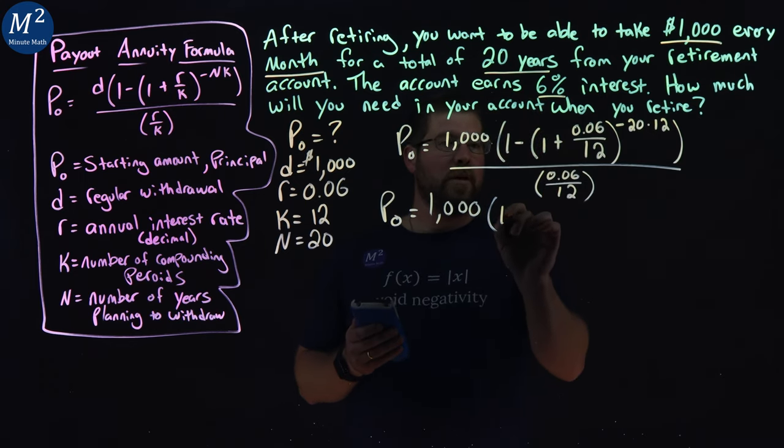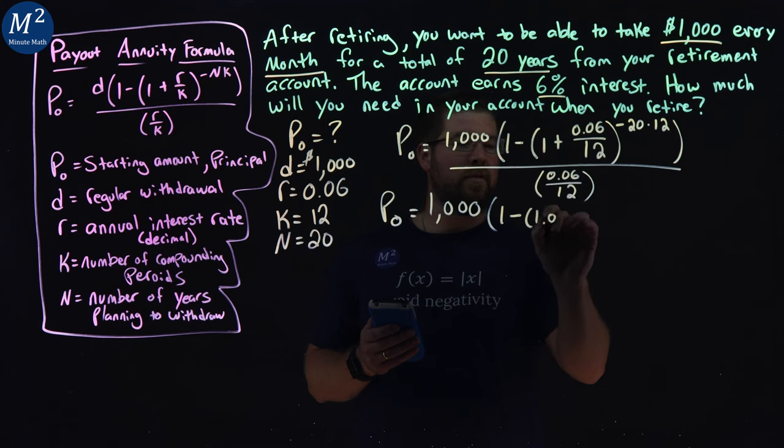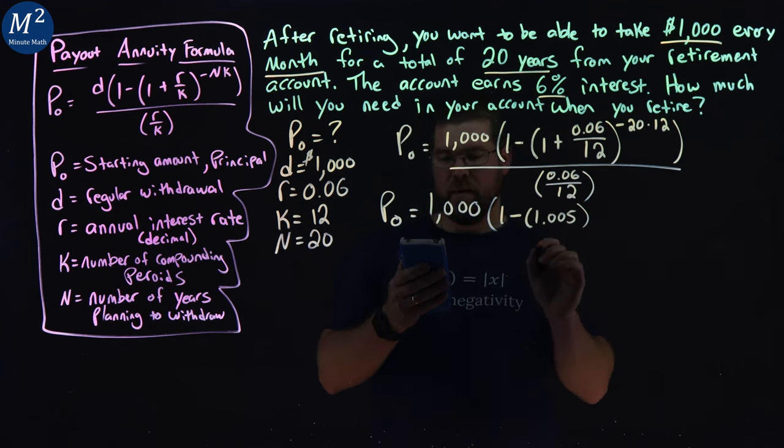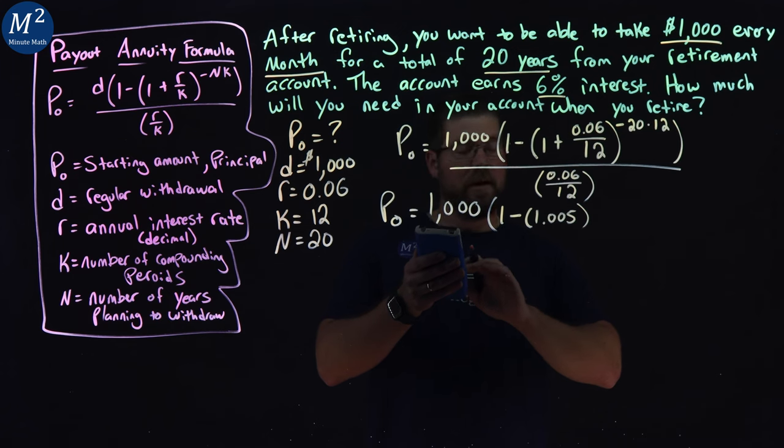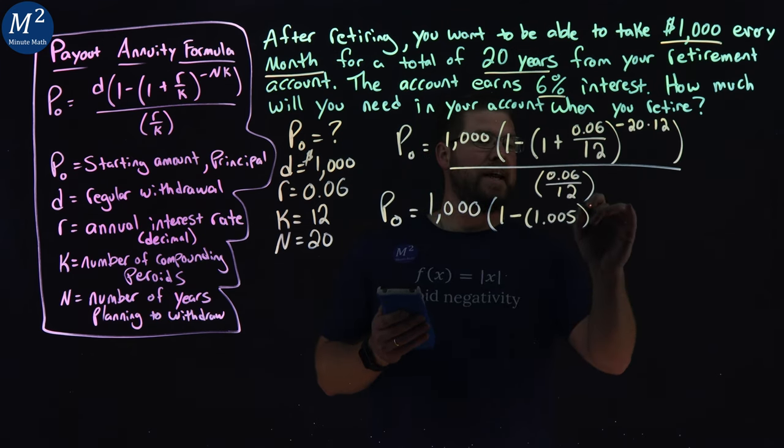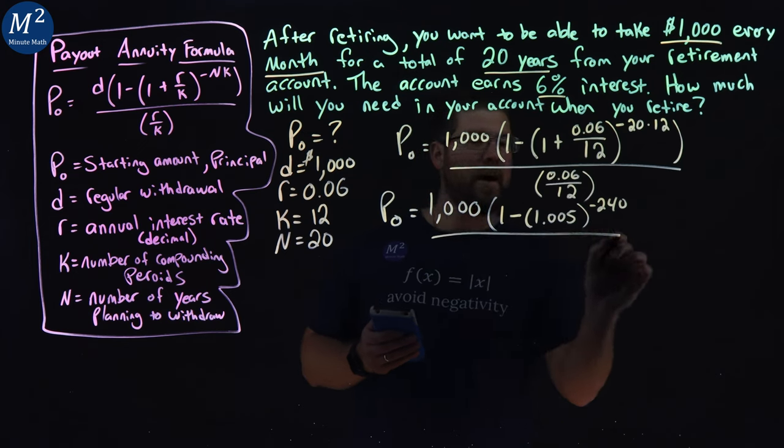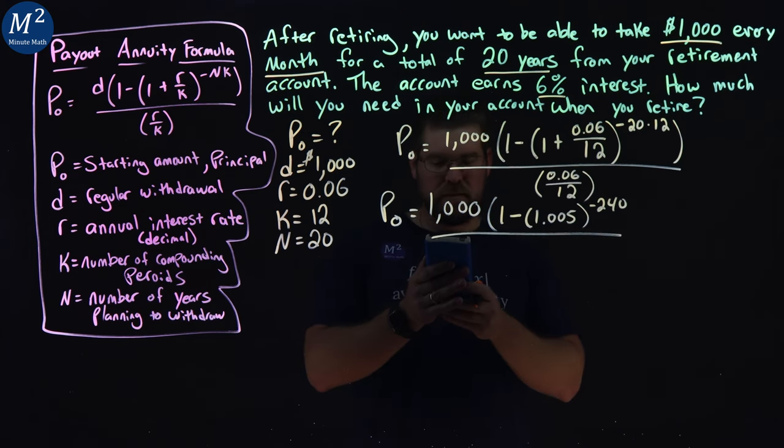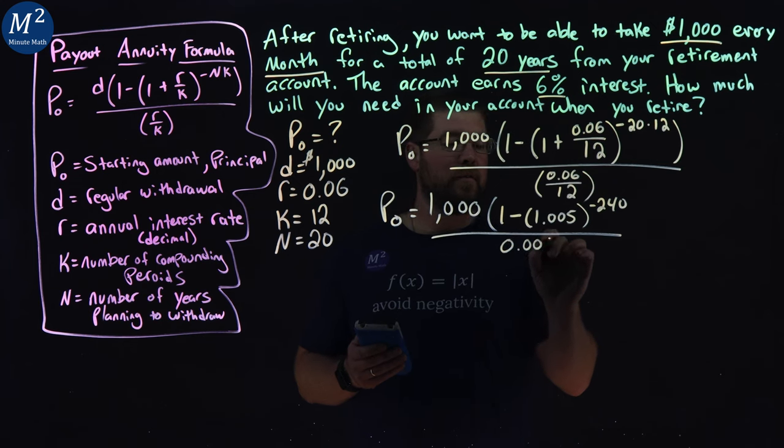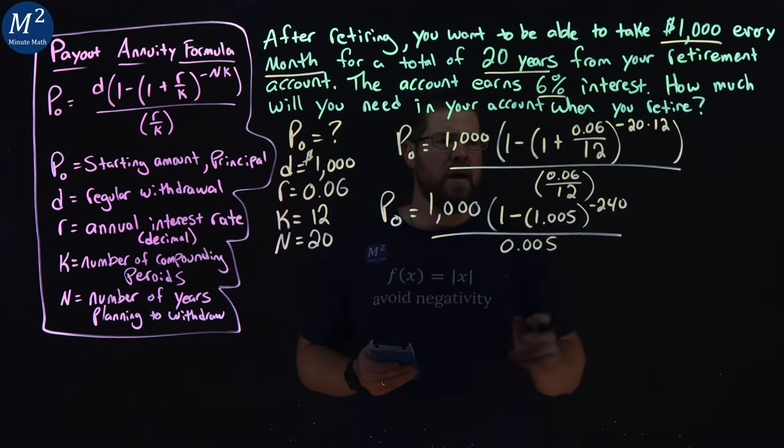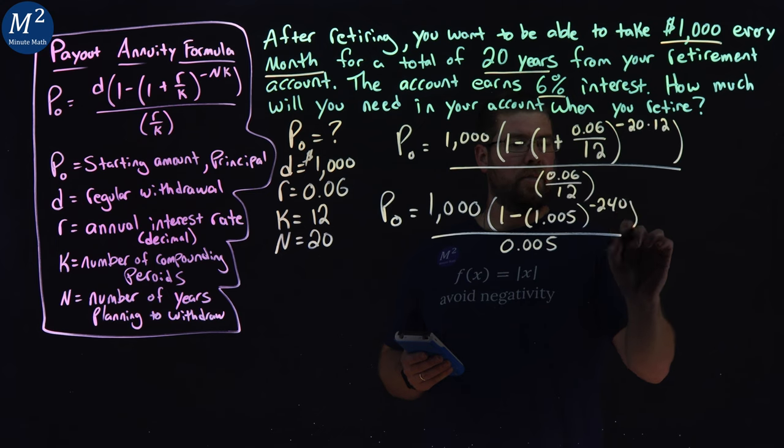So now we have 1 minus 1.005 to the power of negative 20 times 12, which is negative 240. We divide that by 0.06 divided by 12, and it's 0.005.